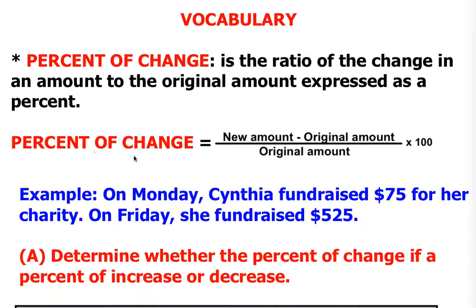Here's your percent of change formula. In order to find the amount of change, you take the new amount minus the original amount, and it's going to be expressed as a ratio compared to the original amount, then multiplied by 100 in order to get a percent answer.